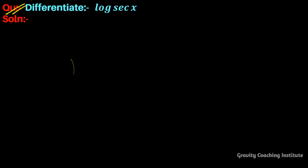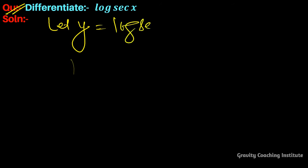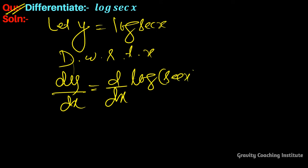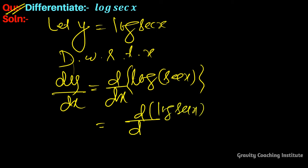Differentiate log(sec x). Let y equal to log(sec x). Now differentiate with respect to x: dy/dx is equal to the derivative of log(sec x), applying the chain rule as d/d(sec x) of log(sec x) multiplied by d(sec x)/dx.